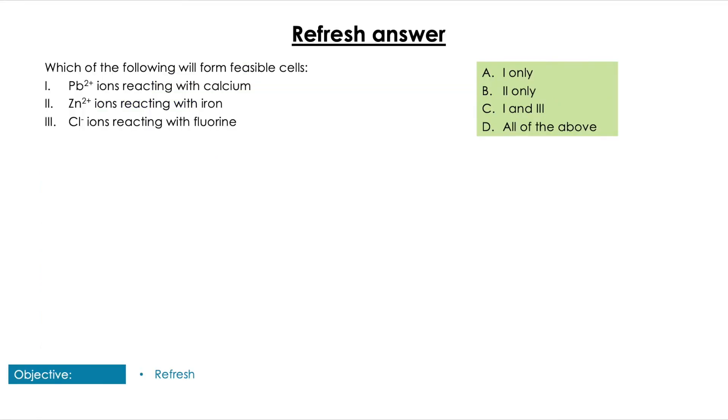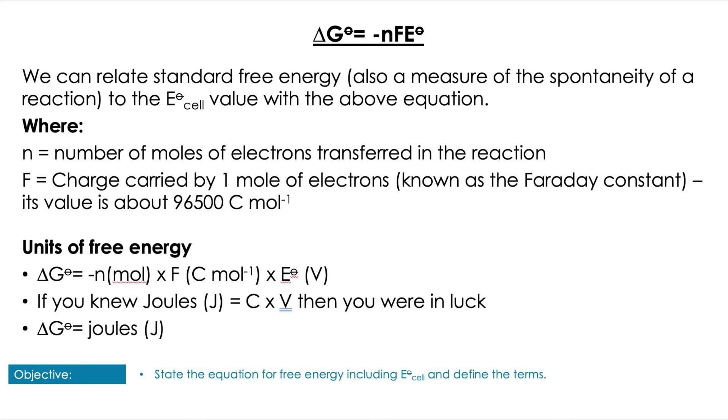So all you're doing here is using your E°cell values to check the feasibility by flipping the relative equation and seeing if you've got a positive E°cell. When we do that with lead and calcium we get a positive value, we don't get a positive value with zinc and iron, and we do get a positive value with chloride ions and fluorine. So the answer is of course C: I and III.